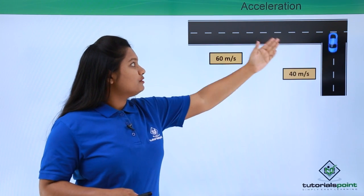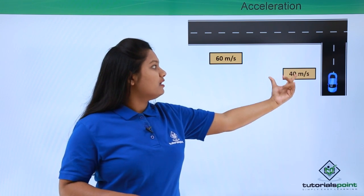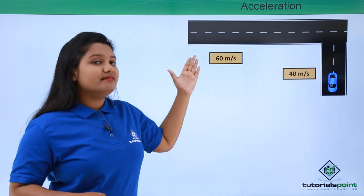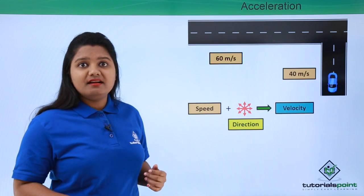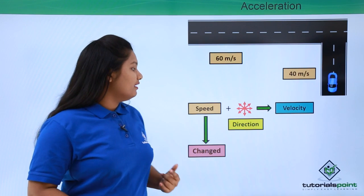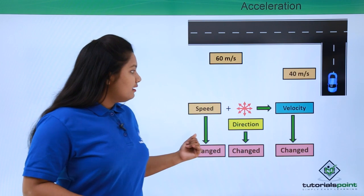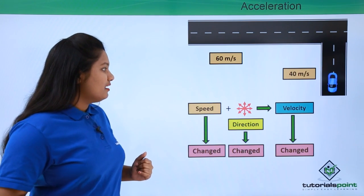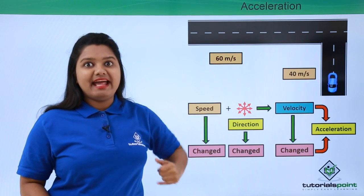Consider the same bent road where the car travels the first part at 60 meters per second and then covers the rest at 40 meters per second. Here, both the speed and the direction of the car have changed. Any change in velocity leads to acceleration, so this motion of the car is also an accelerated motion.